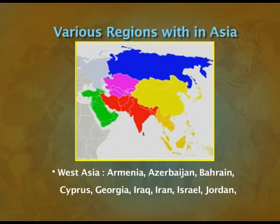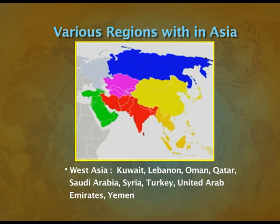The countries shown in green are West Asia, and these include Armenia, Azerbaijan, Bahrain, Cyprus, Georgia, Iran, Iraq, Israel, Jordan, Kuwait, Lebanon, Oman, Qatar, Saudi Arabia, Syria, Turkey, United Arab Emirates and Yemen. This distinction between regions helps us understand the complexity in greater detail. Despite all these differences, there are some similarities between all these regions in Asia as well. But in this chapter, we will focus only on the region called South Asia.